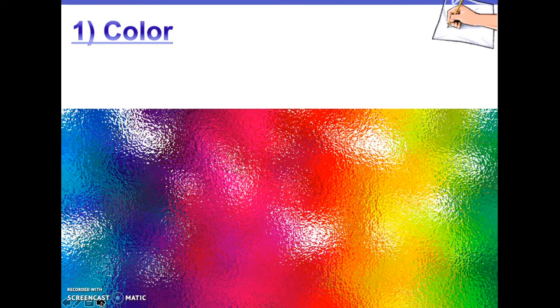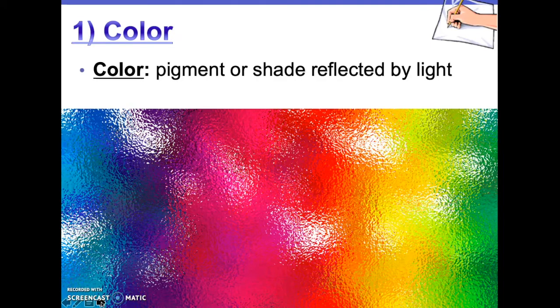Number one, color. How can we define the concept of color? Scientists define color as a pigment or shade reflected by light. This implies that in the absence of light, color would not be observable.